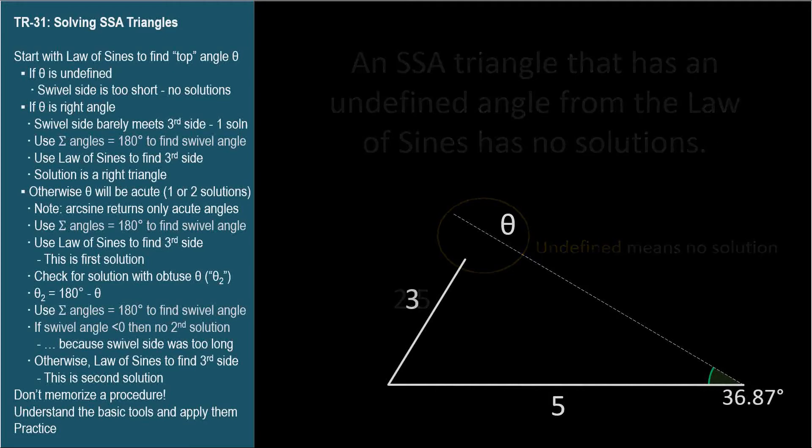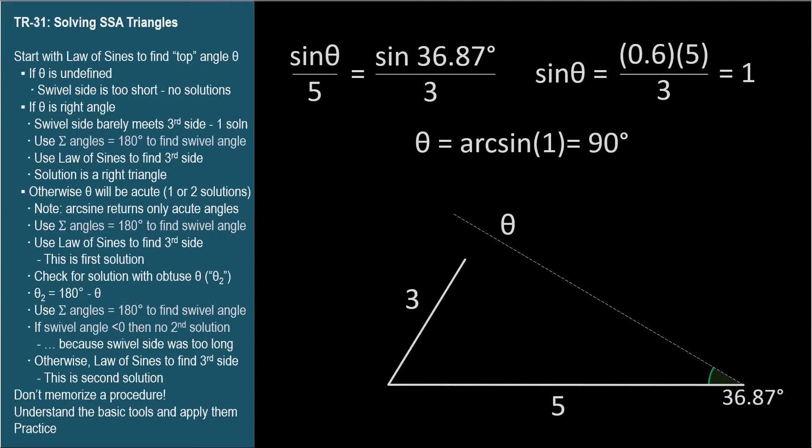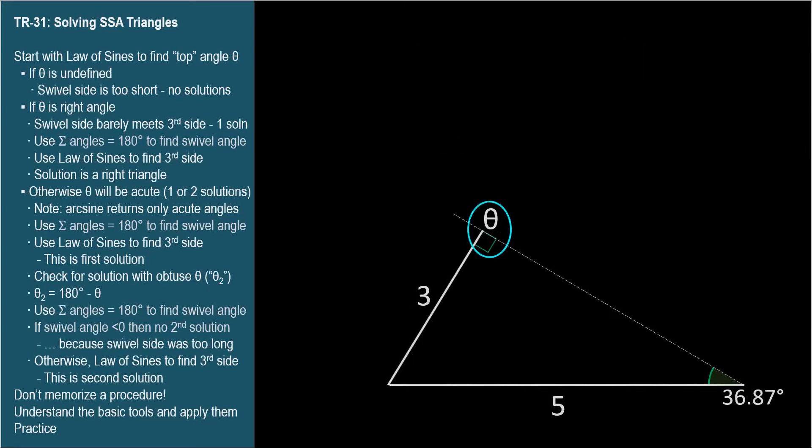Now let's let the length of the swiveling side be 3. This should be our right triangle solution, but let's see what the law of sines tells us. Sine theta over 5 equals sine 36.87 over 3. We end up with sine theta equals 1. As you can hopefully see in your head, sine is 1 at 90 degrees. So theta is indeed 90 degrees.